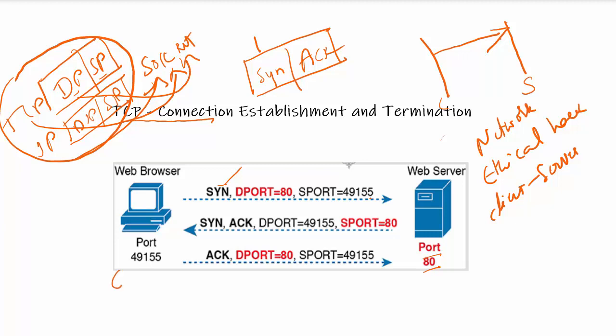For the client to initiate communication with the server there should be a source port, because the web server will respond on that same source port. After the web server receives this first packet, it initiates the second packet, in which the TCP header will have both SYN and ACK turned on. This allows the client to understand that this is the acknowledgement for the SYN packet it sent. Based on sequence numbers, they identify which acknowledgement corresponds to which SYN — for example, if the SYN has sequence number 1, the server responds with acknowledgement number 1.